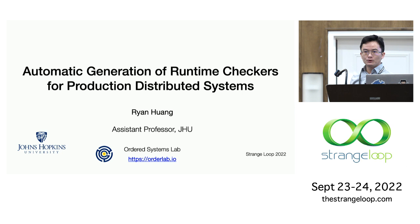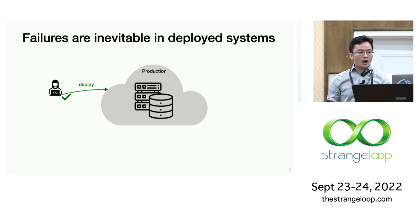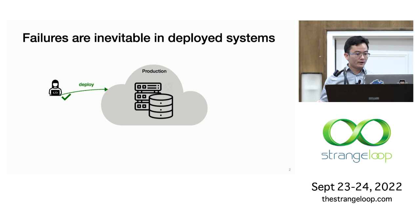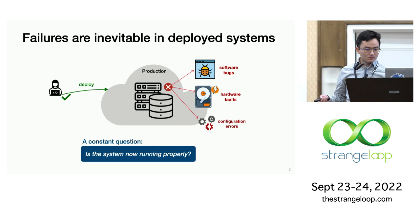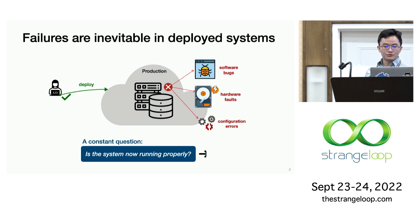For any large systems, no matter how thoroughly you test it, it is inevitable to experience some failures when you deploy to production, due to software bugs, hardware glitches, or misconfigurations. So a constant question that we need to keep asking is: is the system right now running properly? And we rely on a runtime checker to tell us the answer.